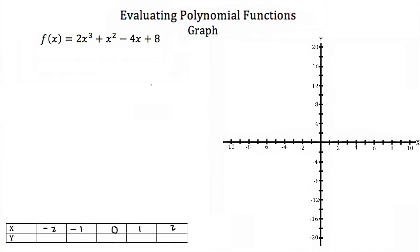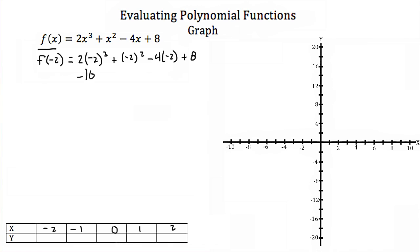We plug these x values into our function to find our y values. Starting with x = −2: f(−2) = 2(−2)³ + (−2)² − 4(−2) + 8. Negative 2 cubed is −8, times 2 is −16. Negative 2 squared is positive 4. 4 times −2 is −8, but we're subtracting it, so that's +8. Then +8 on the end. So f(−2) = 4.